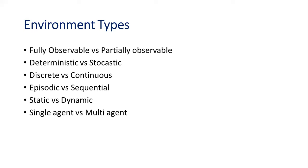The first type is fully observable versus partially observable. A fully observable environment is called an accessible environment — everything in the environment is known to us. An example is the crossword puzzle, where we know exactly what is needed. When you are able to sense the environment completely, we call it a fully observable environment.